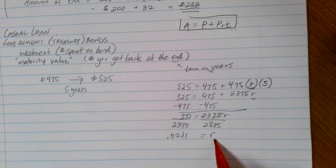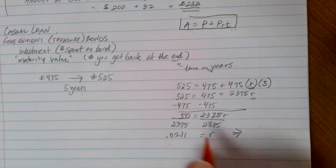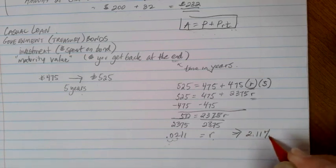This is my interest rate. But remember, because it came out of a formula, this is the decimal version of it. So if I want to change it to a percent, times by 100 there, we end up with 2.11 percent.